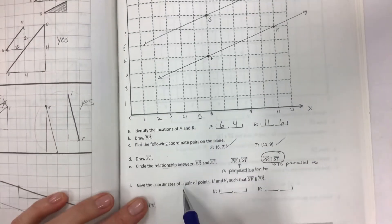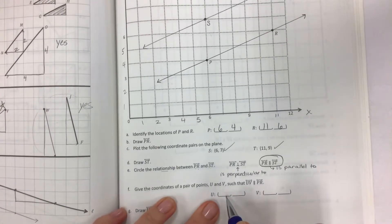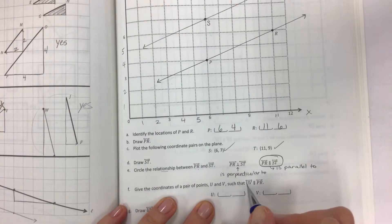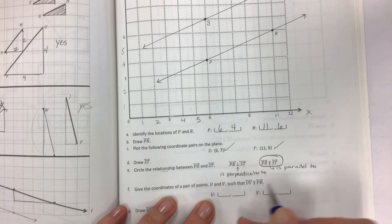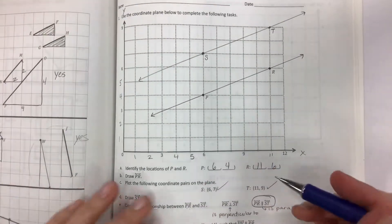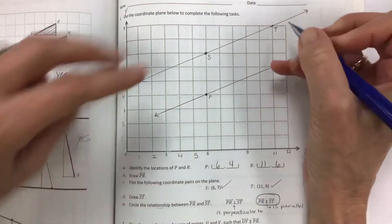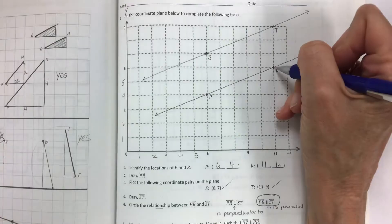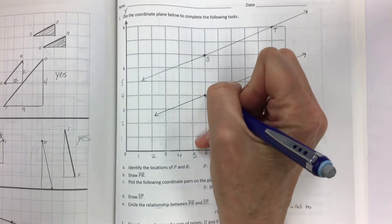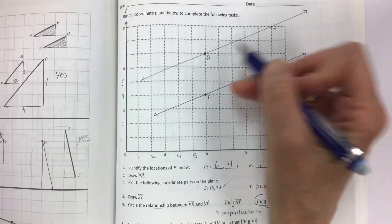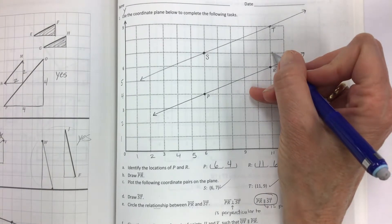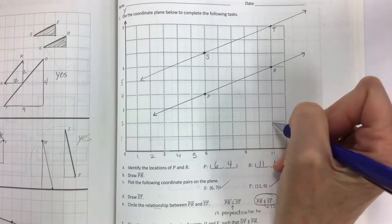Now it says give the coordinates of a pair of points. We're going to give the coordinates of point U and point V such that line UV is parallel to point PR. So here's how you're going to use this strategy without using a little piece of paper that you slide around. Notice the pattern that we use to create line ST. If I go from point R and I go one, two, three intersections up, and then I go from point P one, two, three intersections up, I have a parallel line.